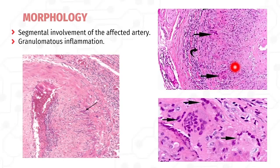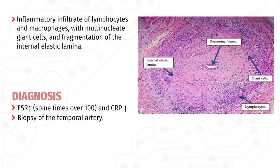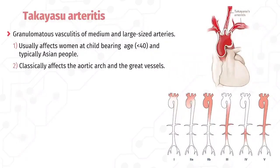Histological slides show giant cells and degenerated internal elastic lamina in active arteritis, with an inflammatory infiltrate of lymphocytes and macrophages with giant cells and fragmentation of the internal elastic lamina. For diagnosis, blood tests indicate elevated ESR — sometimes over 100 mm/hr — and elevated C-reactive protein. Biopsy of the temporal artery is also used. Treatment is with corticosteroids such as prednisolone.